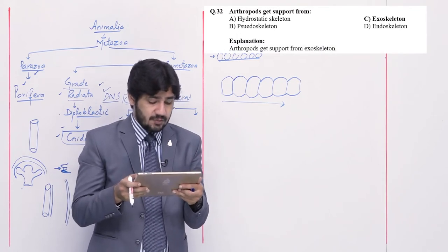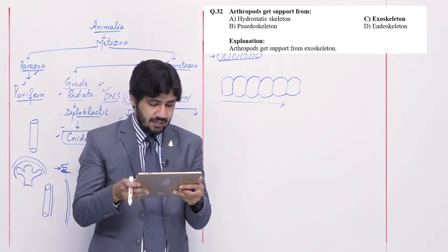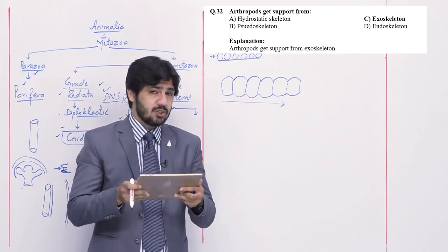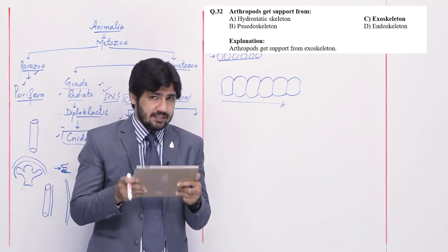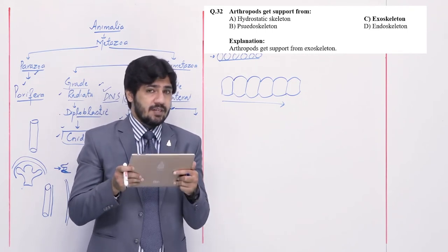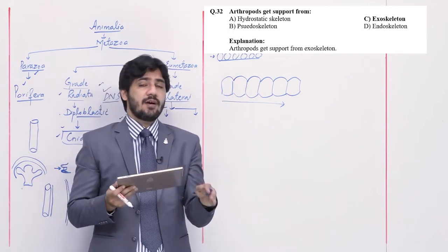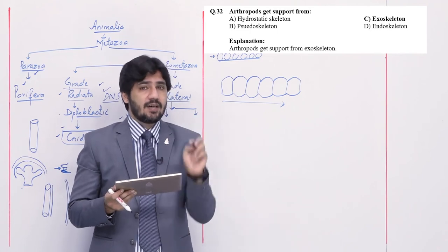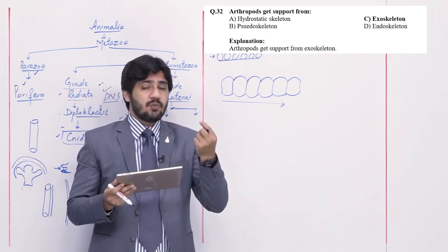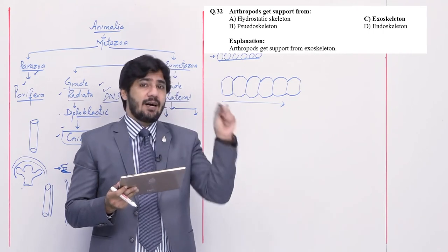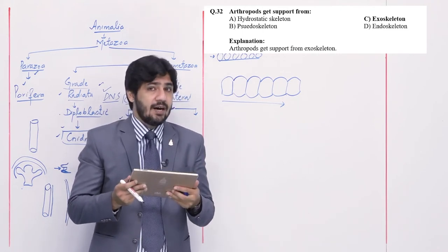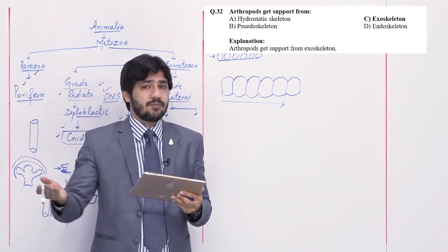Question number 32: arthropods get support from — alpha hydrostatic skeleton, beta pseudoskeleton, charlie exoskeleton, and delta endoskeleton. Before arthropods, different animal phyla have hydrostatic skeleton — for example, each segment of earthworm (annelid) has its own hydrostatic skeleton. Arthropods primarily have exoskeleton because the outer covering of chitin provides body support, movement, shape, and protection. Right option is charlie — exoskeleton. Endoskeleton developed later in subsequent phyla.